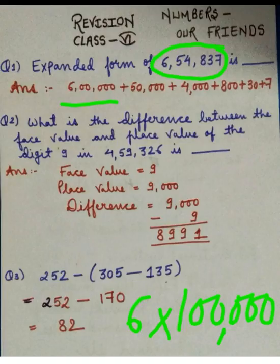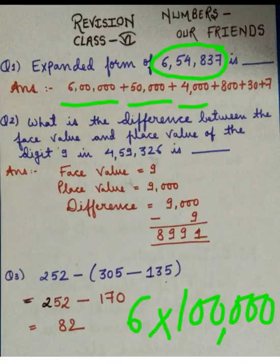What is the place value of 5? 5 is at 10,000. The place value of 5 is 10,000. So we will multiply 5 by 10,000 and we will get 50,000. Plus, the place value of 4 is 1,000, so we will multiply 4 by 1,000 and we will get 4,000. Next is 8. The place value of 8 is 100, so we will multiply it by 100 and we will get 800.